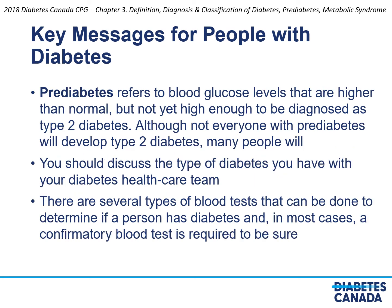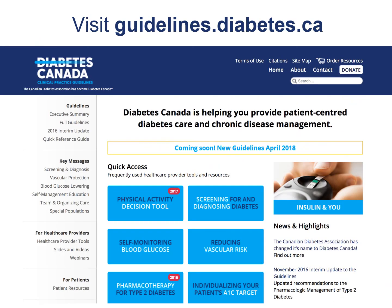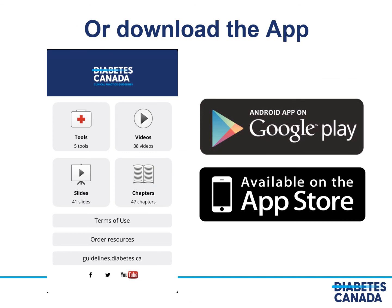Furthermore, prediabetes refers to blood glucose levels that are intermediate between normal and diabetes ranges. Although some people with prediabetes will develop type 2 diabetes, many will not. Patients with diabetes should discuss the type of diabetes with their healthcare provider, and those who are at risk should know that there are several types of blood tests that can be done to determine if a person has diabetes, and a confirmatory test should be done in most situations. This presentation and more information about diabetes diagnosis and classification can be found on the website for Diabetes Canada and with their mobile apps.